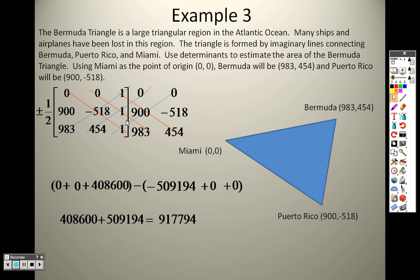The reason it's plus or minus is if I had a negative number here, I would use negative one-half. But since it's a positive answer, I multiply by a positive half. So there is the area of the Bermuda Triangle: 458,897.